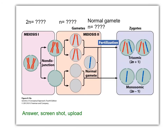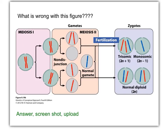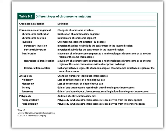Here are some questions: What is the 2n number? What is the n number? What do normal gametes look like? We can see a non-disjunction — where is it? Fill out the form, take a screenshot, and upload for points. The last question asks what is wrong with this figure — figure out where there's a problem, mark it, and upload. And here's a table of chromosome mutations — these are all the things you should know. For auto and allo polyploidy, you don't really need to know the difference, but please do those homework problems.